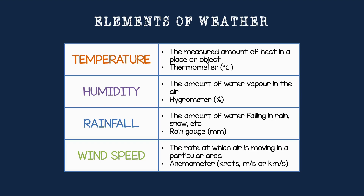Now we're going to discuss the elements of weather. There are quite a few of them, and these are important for when you do synoptic weather maps in grade 10 and later in high school. The different elements of weather are measured in different units and with different instruments. Temperature is the measured amount of heat in a place or object, and we measure temperature with a thermometer in degrees Celsius. Other countries, like America, use Fahrenheit.